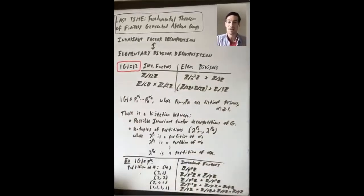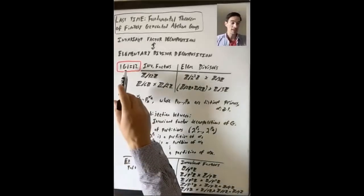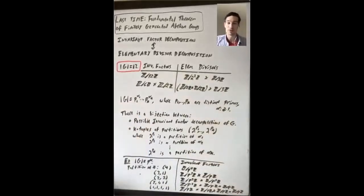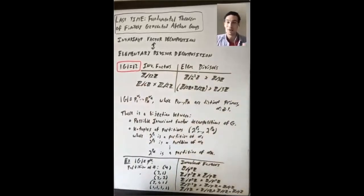We talked last time about how to go from invariant factors to the elementary divisors of your group. So what are elementary divisors? What's the elementary divisor decomposition? The idea is to write G as a product of its Sylow p-subgroups — you want to break up the group into its prime power size pieces. For 12, the only primes dividing it are two and three, so we'll have one group for the two parts and one group for the three part, and we'll take the direct product of the two of them.